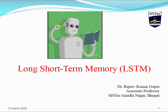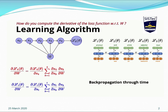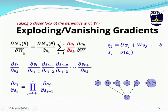Hello students, today we are going to discuss Long Short Term Memory (LSTM). Before discussing LSTM, we will discuss the limitations of Recurrent Neural Networks. In previous videos we discussed how to design an RNN for sequence classification and sequence labeling, and how to calculate the loss function with respect to U, V, and W. We derived equations for calculating the loss function at layer t with respect to W, and saw that the loss at each layer depends on all previous layers.